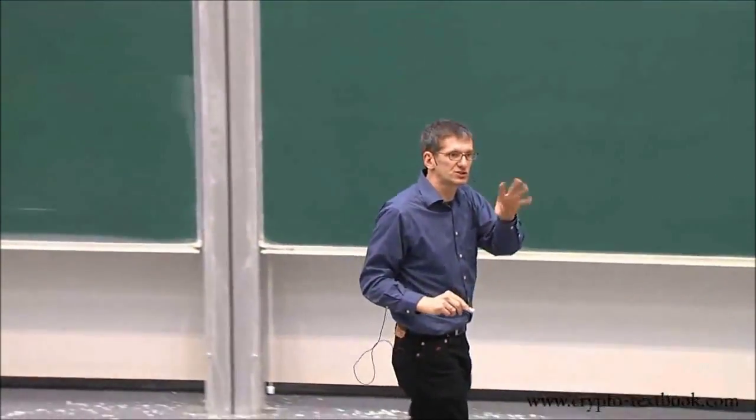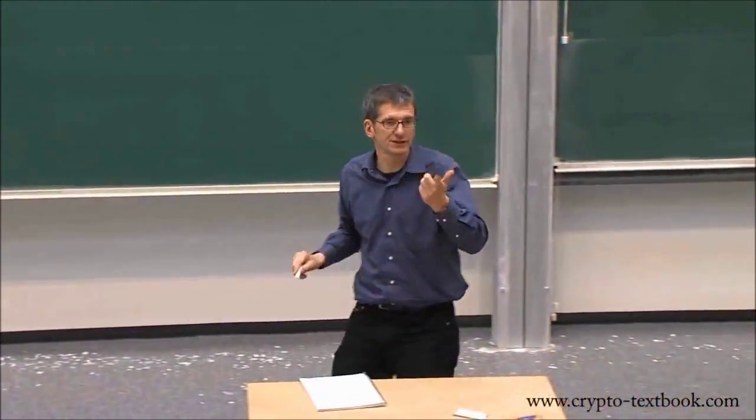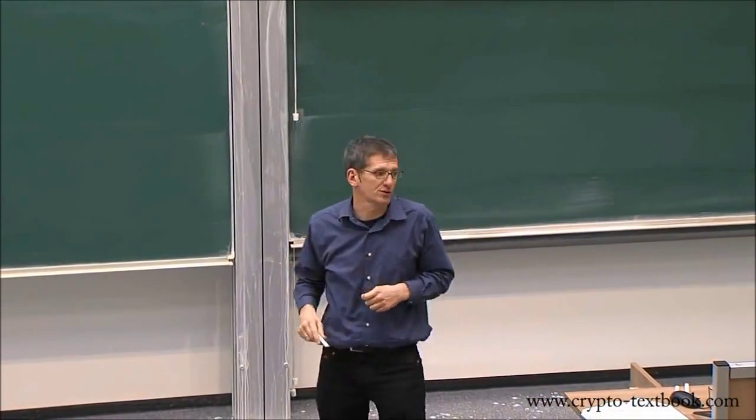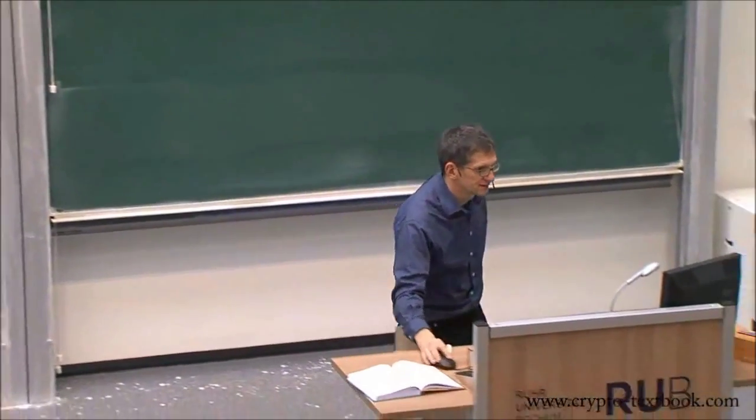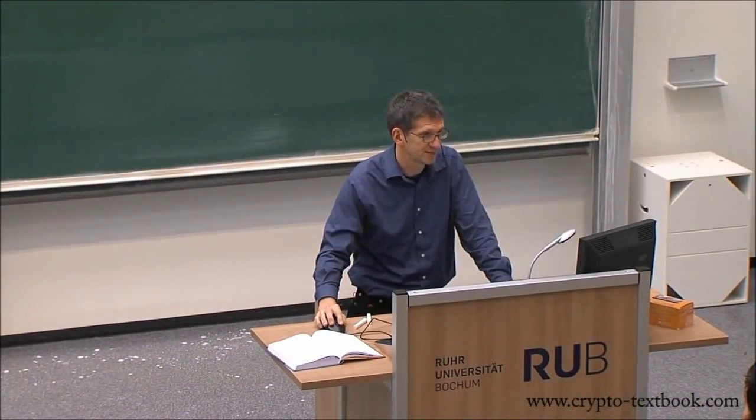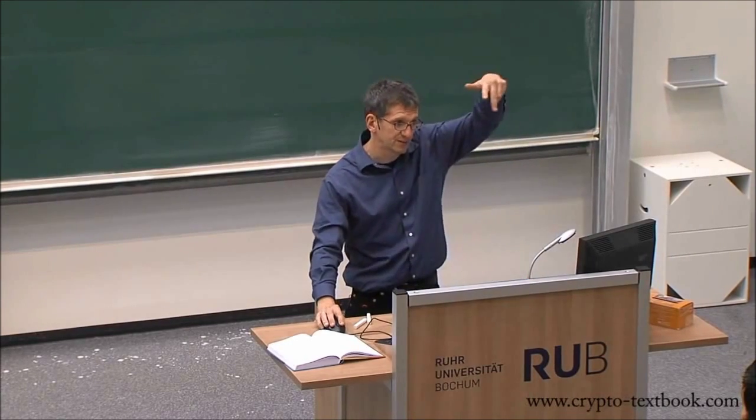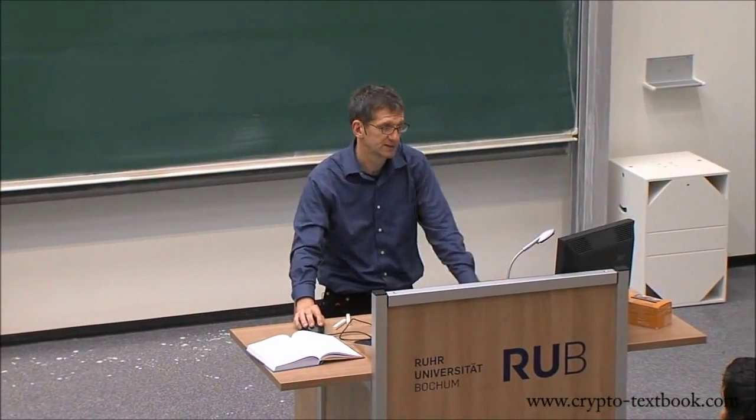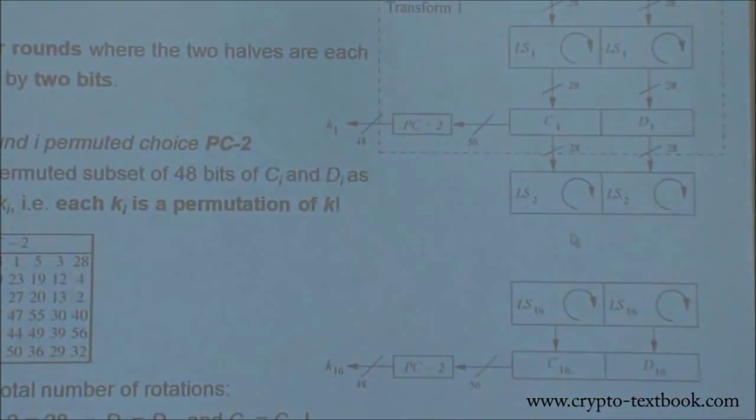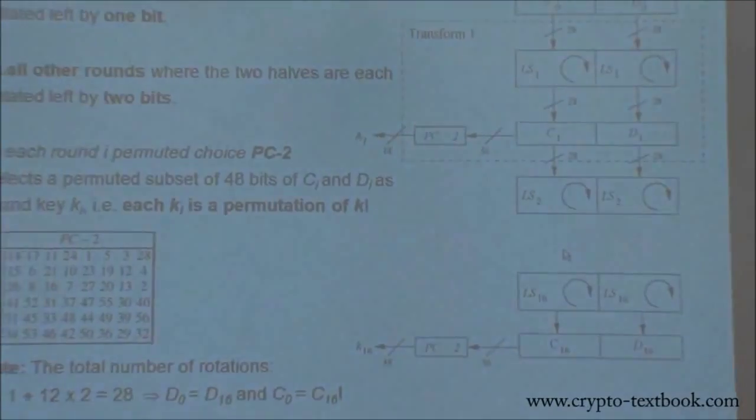And that should sound familiar because this number 28 comes up a few times in this block diagram over there. So we have, because we have 28 bits here. So what's happening, we start with C0, 28 bits. We do a one bit shift here, a one bit shift here. And then in most other rounds, we shift by two positions.